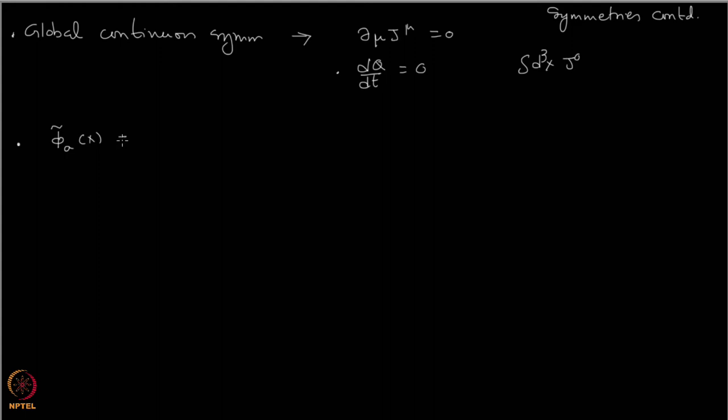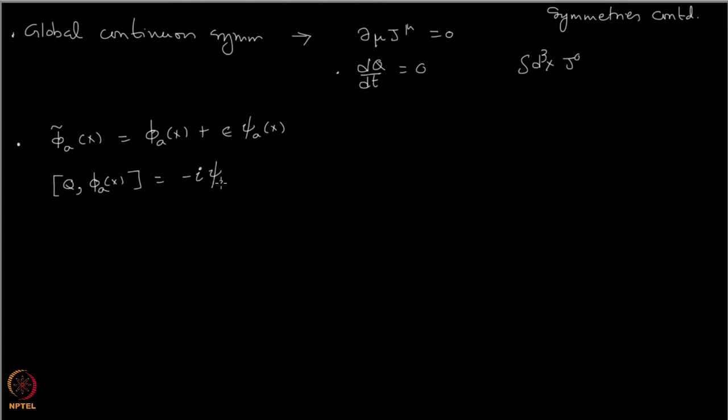What this precisely means is the following: if you have a symmetry transformation where epsilon is a small parameter and this is the transformation of the field, then if you take the commutator of the conserved charge Q with the field, it gives you — apart from a factor of minus i — epsilon times psi of x.